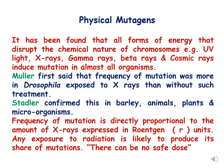Mueller was the first to show that the frequency of mutations is greater in Drosophila when exposed to x-rays than without such treatment, and Stadler confirmed this in barley, animals, plants, and microorganisms. The frequency of mutation is directly proportional to the amount of x-rays expressed in Roentgen units, and any exposure to radiation is likely to produce its share of mutations.